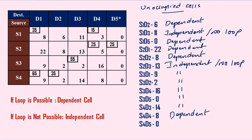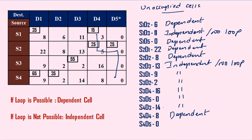Loop is possible for S4, D4. Next: S4, D5. S4, D5 has two possibilities — right side, upward direction, or left side. Going upward, left, upward again, left, down, right — yes, a loop is possible. This is a step-wise type of loop. So S4, D5 is having a loop — it is dependent. Our process based on loops is now completed.